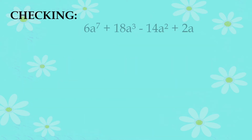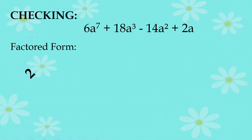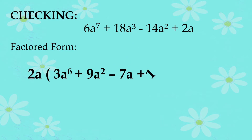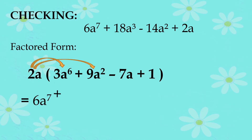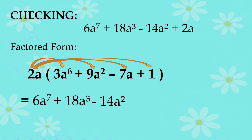Checking: To verify your answer, just multiply back. We go back to multiplying a monomial by a polynomial using the distributive property. Since it matches the original expression, our answer is correct.